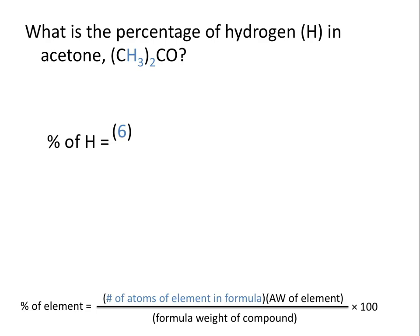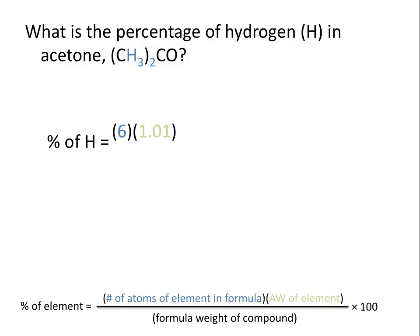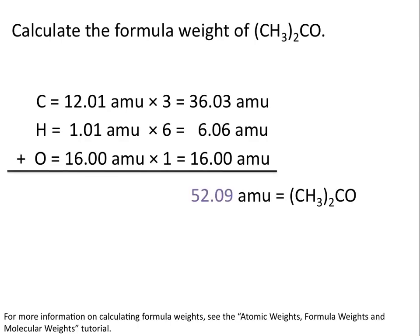We multiply this by the atomic weight of the element, which from looking at our periodic table is 1.01 AMUs, and divide that by the formula weight of the compound, which again using our periodic table we've determined to be 52.09 AMUs per molecule of acetone.